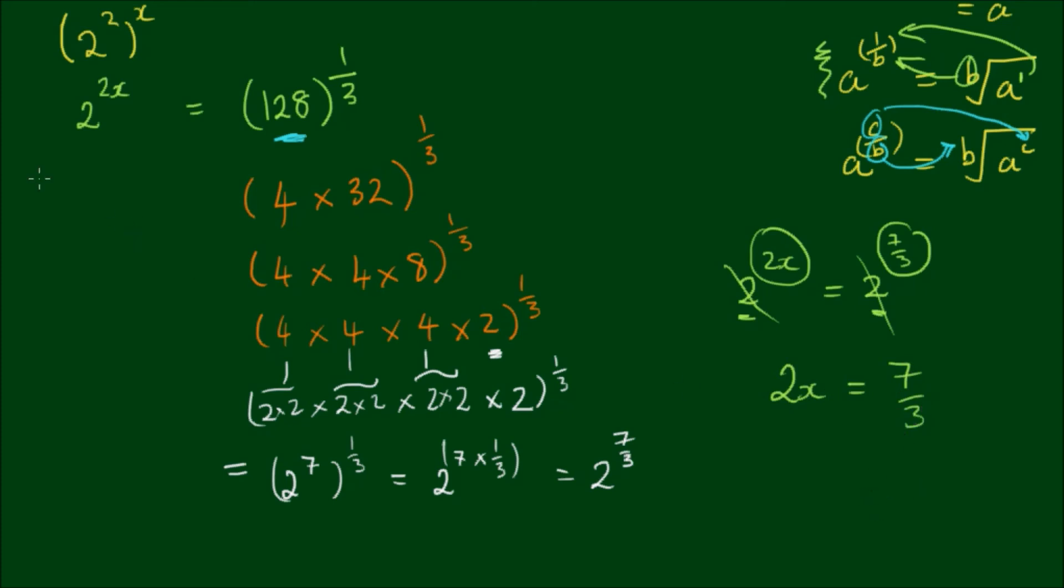And the remaining thing to do is to get x on its own. Which we can do by dividing the left-hand side by 2. And if we divide by 2 on the left, we divide by 2 on the right. Which is equal to multiply by a half. So that means x is equal to 7 thirds or 7 on 3 times a half. So therefore x is equal to 7 on 6.